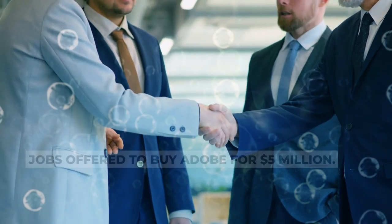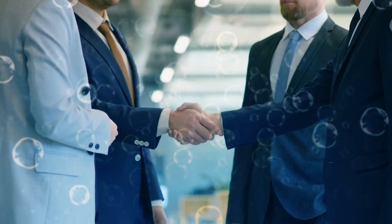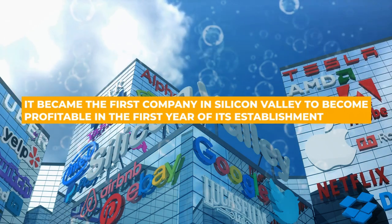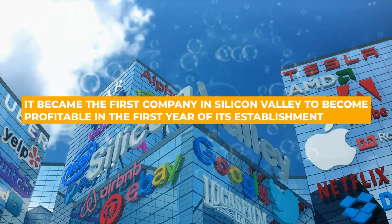Instead, they had a deal with him. They sold him shares that were worth 19% of the company. Seeing the company's potential, Jobs also paid five times the valuation of the company, and this became a game-changer for the company. In fact, it became the first company in Silicon Valley to become profitable in the first year of its establishment.